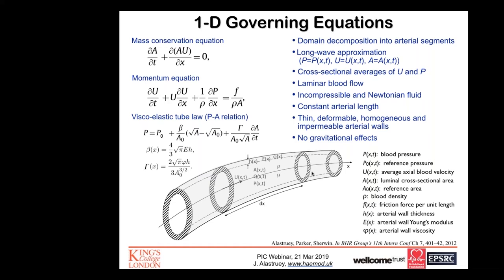The third equation is called the tube law and relates changes in blood pressure to changes in cross-sectional area, taking into account the material properties of the arterial wall, such as the Young's modulus E, which is a measure of arterial wall stiffness. We solve these governing equations for each arterial segment using an in-house finite element method.